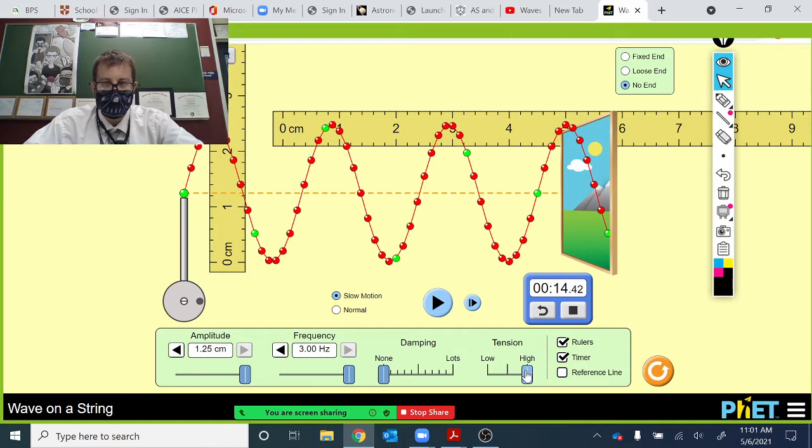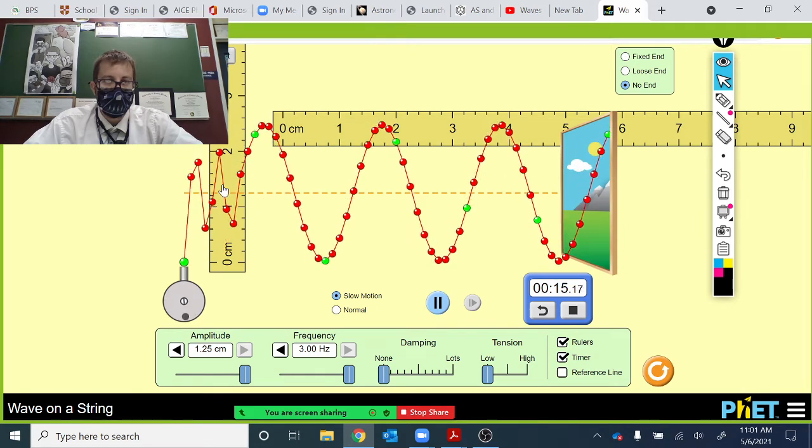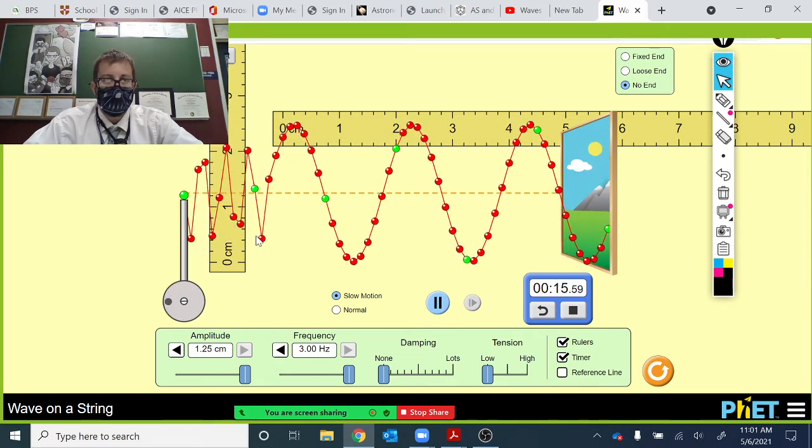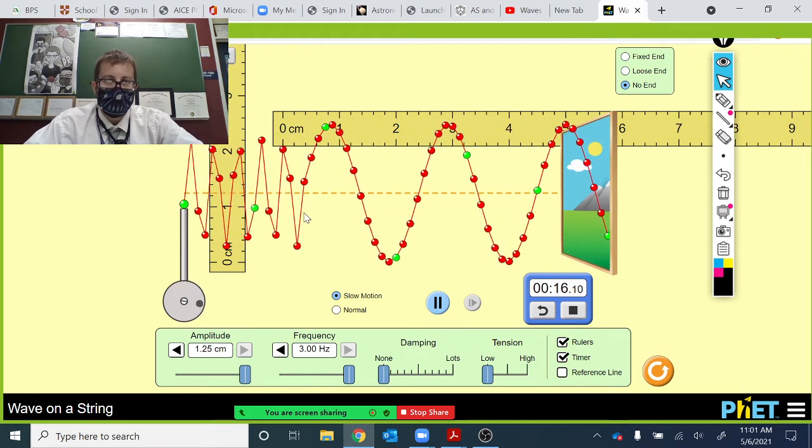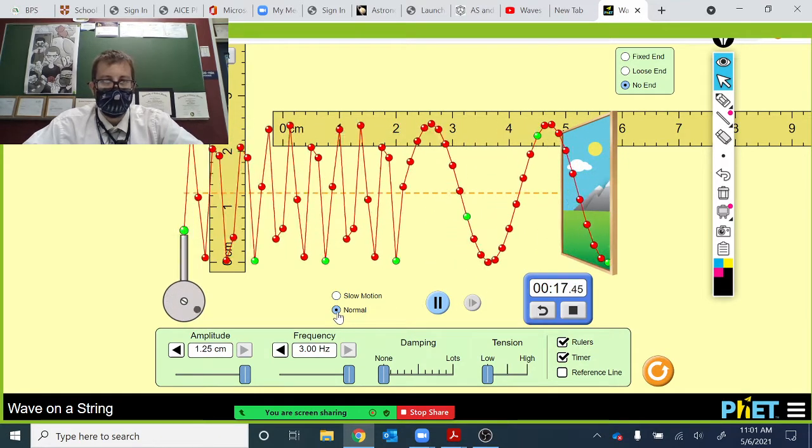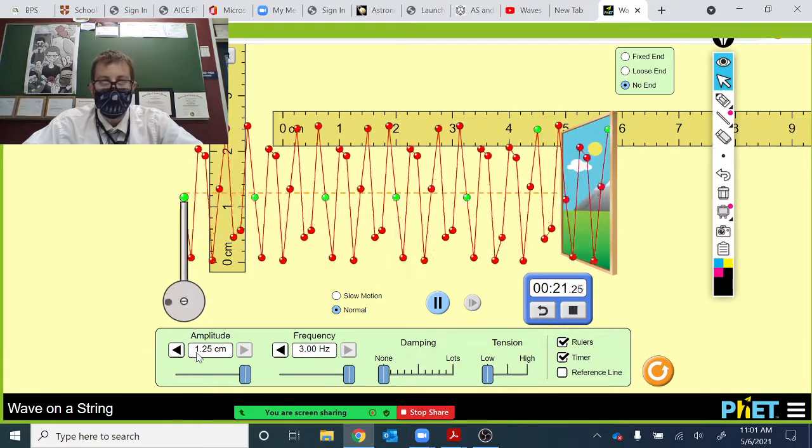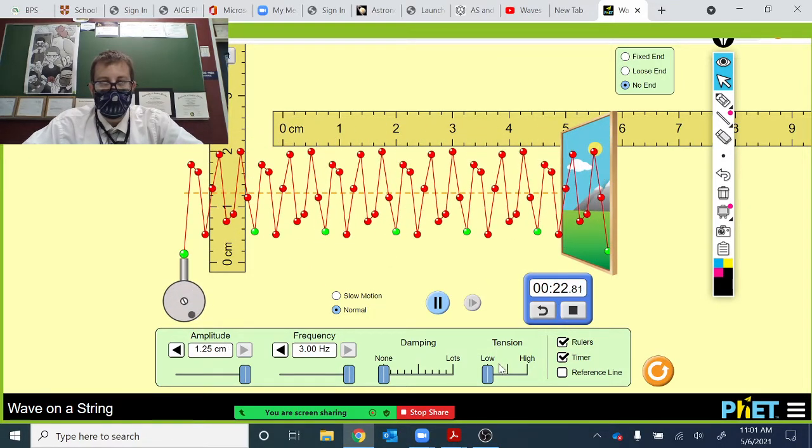Tension. What's that going to do if we have high tension or low tension? Let's put the tension all the way to low and explore what this simulation has to offer. So we've got low tension. You can see now the particles aren't as tightly bound to each other. That's very low tension in the string. I'm going to put this on normal motion.